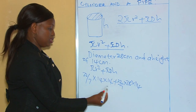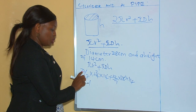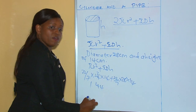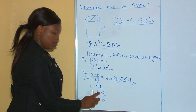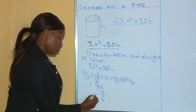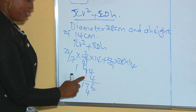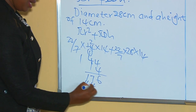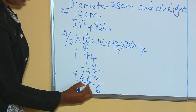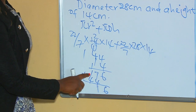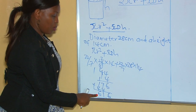We begin by working out the area of the circle: 22/7 × 14². Simplifying, 7 divides into 14 twice, giving 22 × 2 = 44. Then 44 × 14: 4×4=16 write 6 carry 1; 4×4=16 plus 1 is 17; 1×4=4; giving us 616. Therefore the area of the circle is 616 square centimeters.